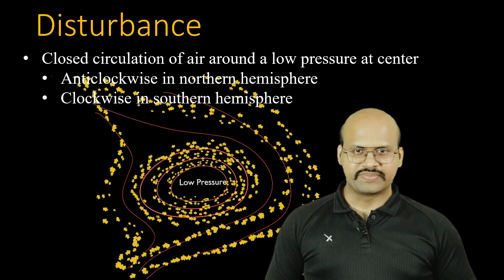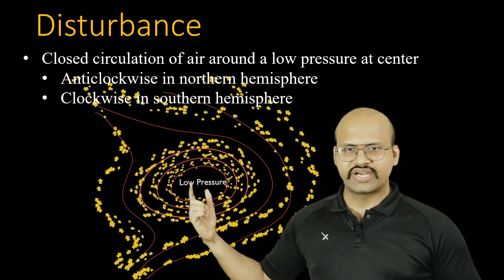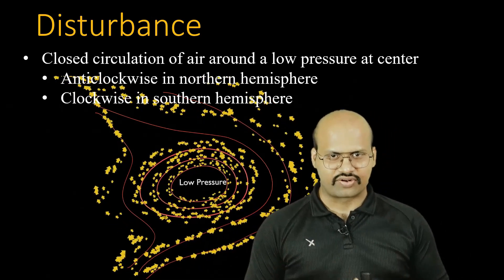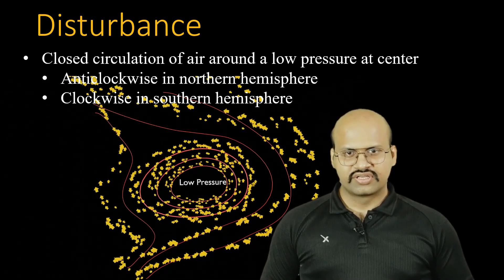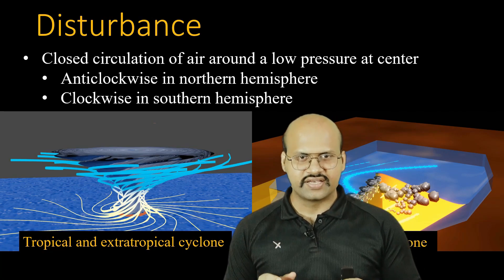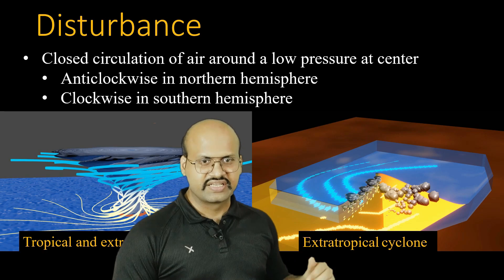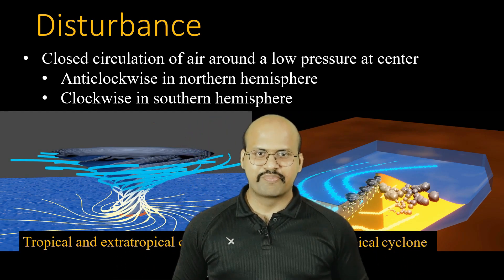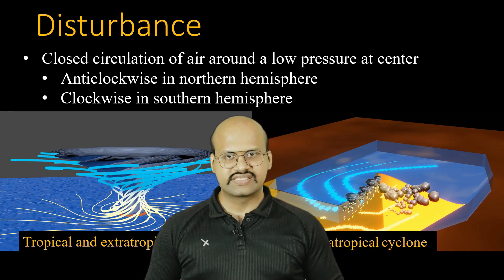In climatology, 'disturbance' means any area having low pressure with air circulating around it. A disturbance is not a fully developed cyclone but something which develops into one. A cyclone could be tropical or extra-tropical, but in the term 'western disturbance,' the word disturbance specifically refers to extra-tropical cyclones.